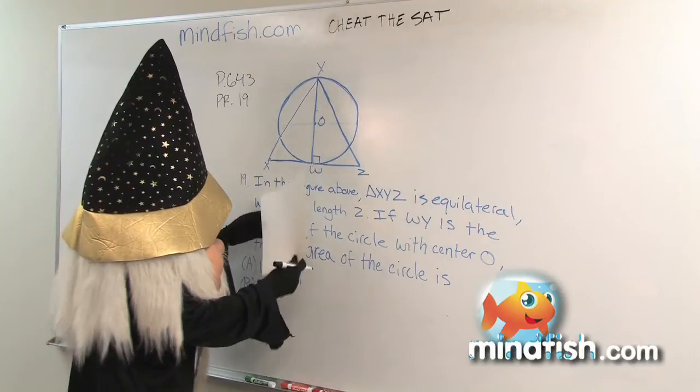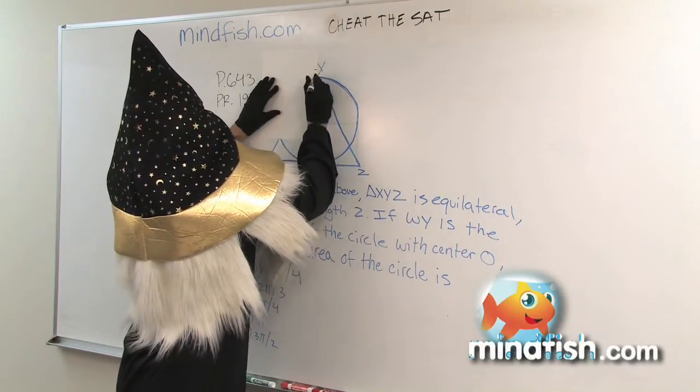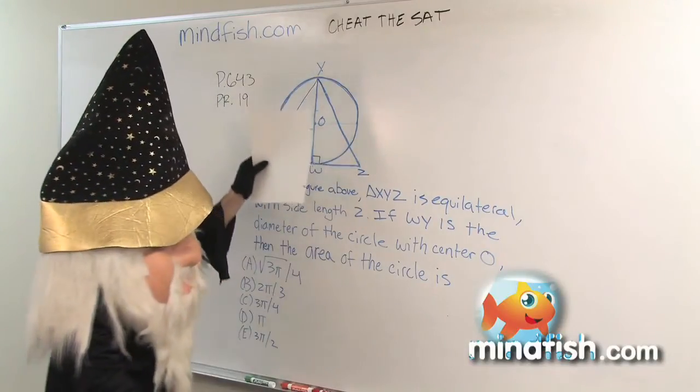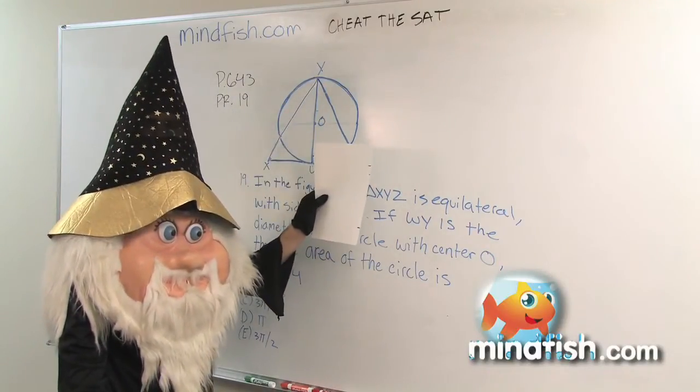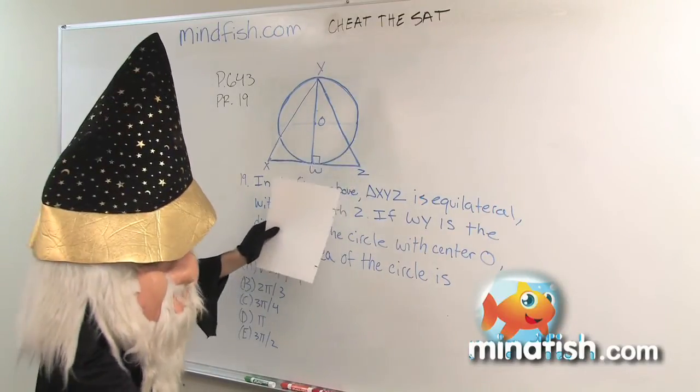We're then going to take that length and estimate the radius of our circle. So the radius of our circle is very close to one, maybe between 0.8 and 0.9. So let's call it like 0.85, or you can do 0.8 or 0.9, either one's fine.